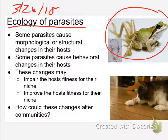This parasite affects frogs in their early developmental stages and damages tissues that become body parts. When those tissues are damaged, some frogs don't have enough legs and some have too many. It's strange that it can work in both ways, but it comes down to the DNA that codes for building a leg getting turned off or turned on incorrectly.